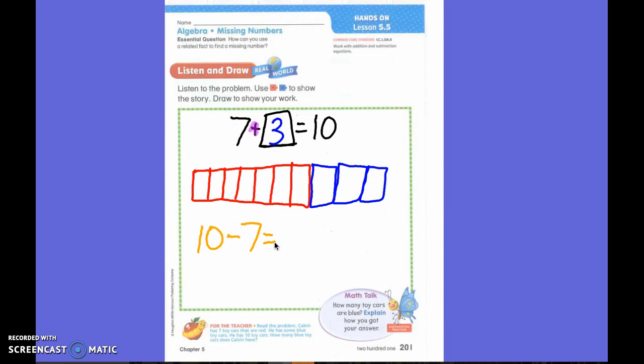So I could have drawn 10 cubes. And then I could cross—whoops, I'm sorry, that's wrong. Then I could have crossed seven out. And then I would have ended up with? Three.